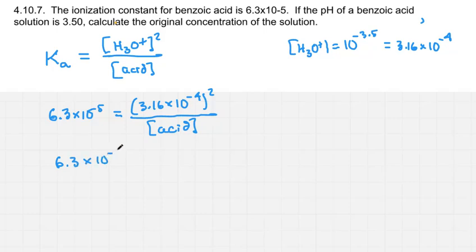6.3 times 10 to the minus 5 equals 1 times 10 to the minus 7. And instead of writing the brackets in this, I'm just going to write A. Make this flow a little nicer.